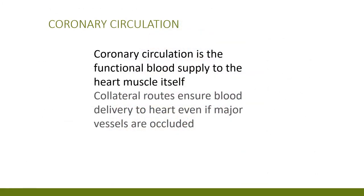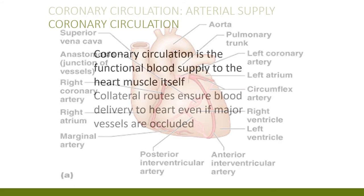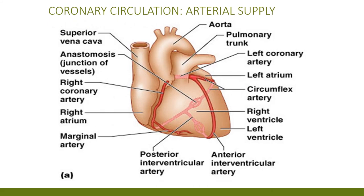The coronary circulation is the functional blood supply to the heart muscle itself. The heart is beating all day long — it needs lots of oxygen and lots of blood supply. The collateral routes make sure you get good blood delivery to the heart, even if there's a major vessel occlusion. Review the coronary arterial supply and veins on your own — take your time and go through them.